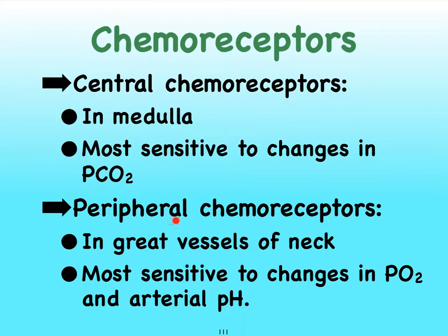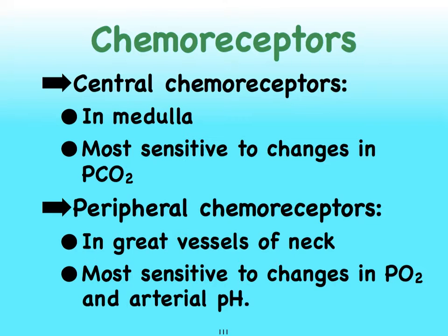Our peripheral chemoreceptors are located in those greater vessels of our neck, pretty much in the same locations as where our baroreceptors are located — so in the aortic sinus and in the carotid sinus. These are most sensitive to changes in the partial pressure of oxygen and the pH of our arterial blood.